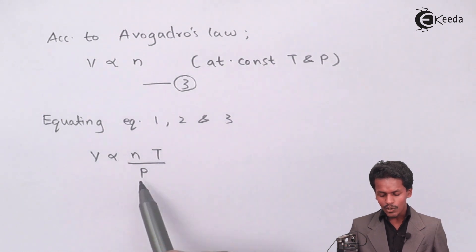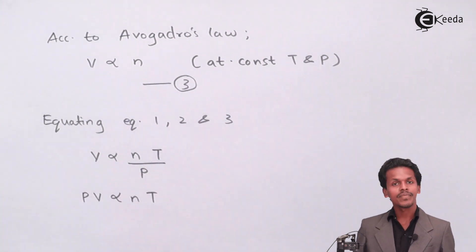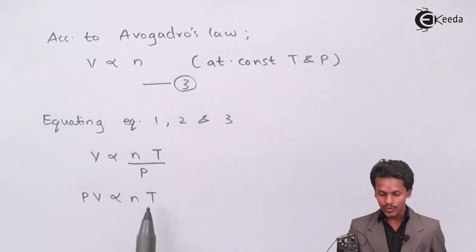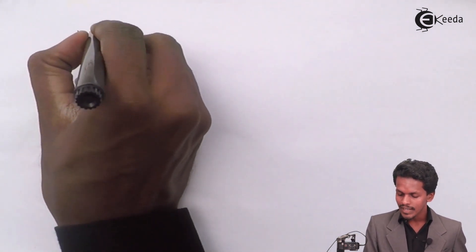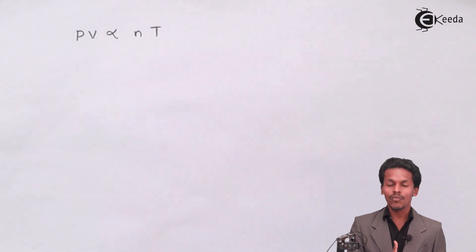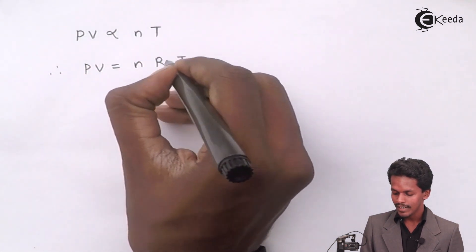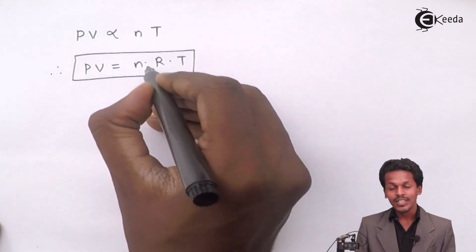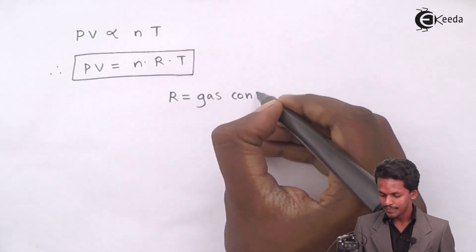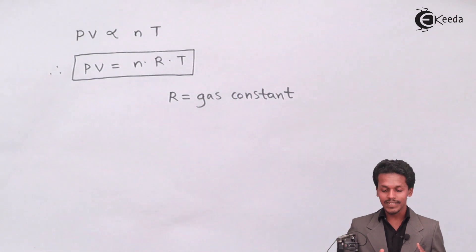We can now write PV as directly proportional to N and T. However, the proportionality still needs to be removed. To eliminate it, we introduce a constant R, giving us PV = nRT. Here R is the gas constant. This equation, derived by combining all three gas laws, is nothing but the Ideal Gas Equation.